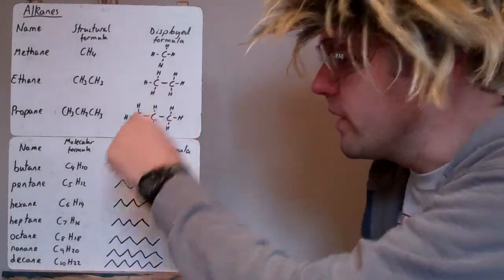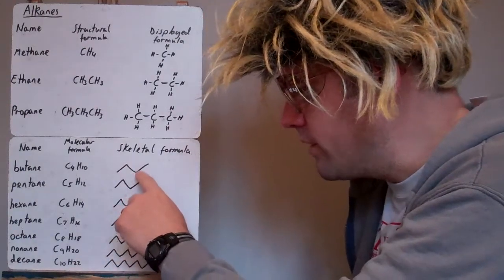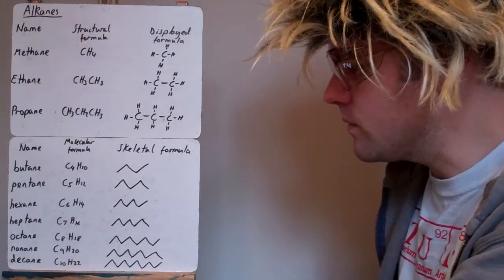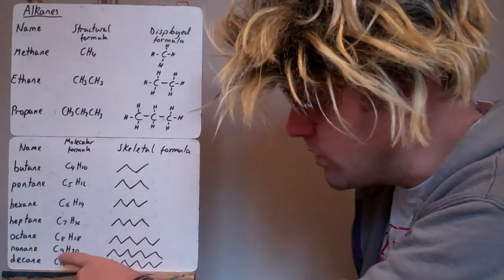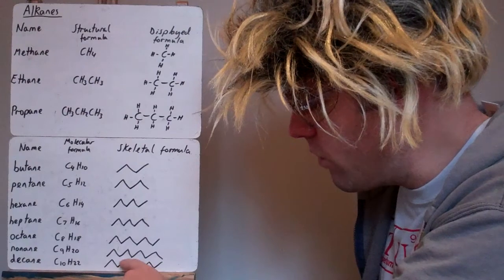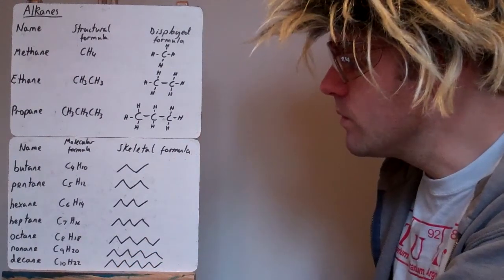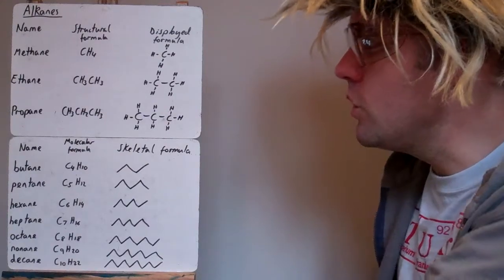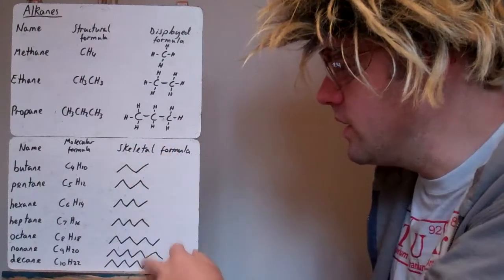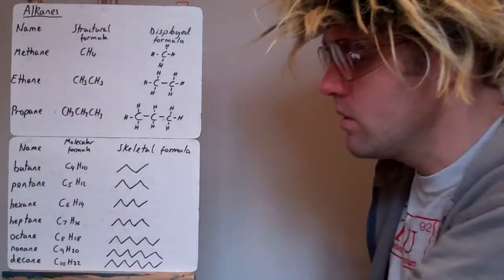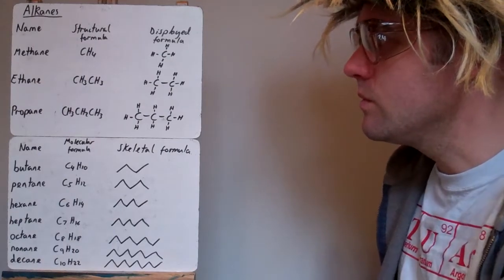Okay. These display formulas don't give us much idea about the shape. But each one of these carbons is tetrahedral, so the shape would be more like that. So, you can see that just as the chain gets longer, you get more zigzag. So, this one's decane. One, two, three, four, five, six, seven, eight, nine, ten carbons. Okay, so you need to be able to do structural formula, display formula, molecular formula, skeletal formula, and name all the first ten alkanes.